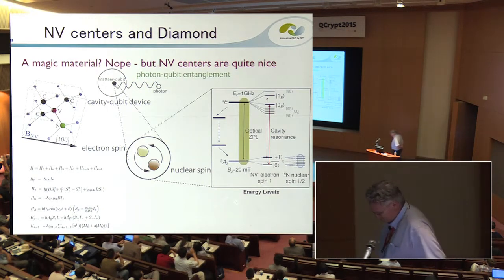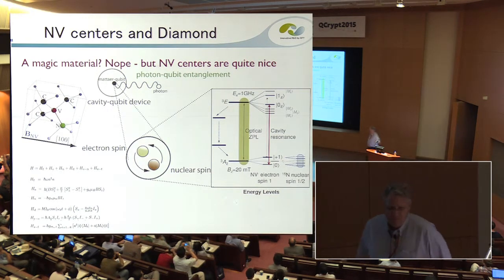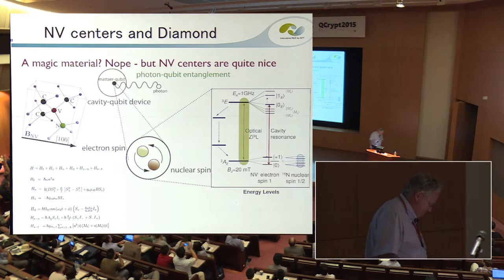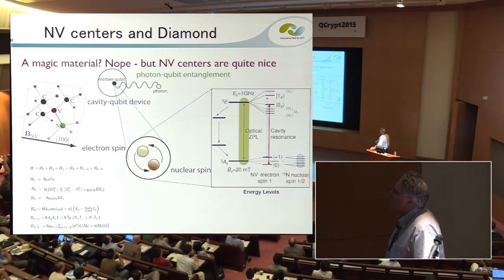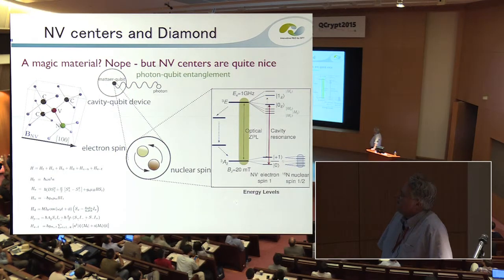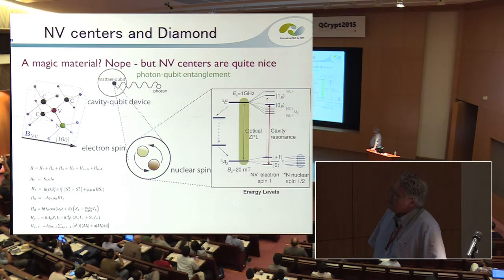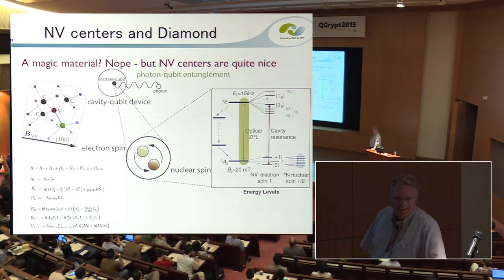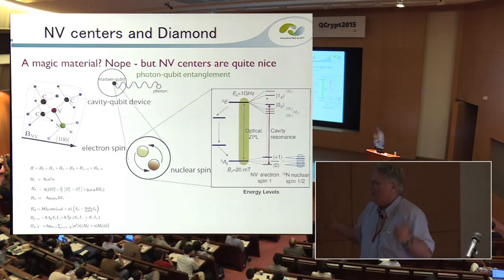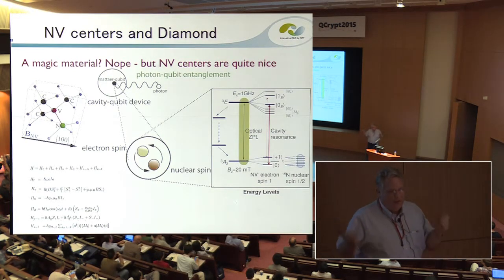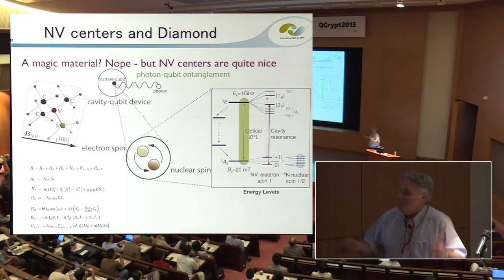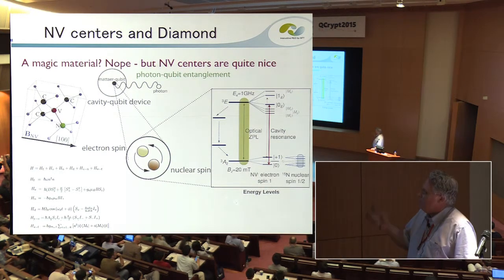I want to look at NV centers in diamond. It's an interesting physical system, and it's what the experimental group we're working with is actually working with. NV centers in diamond at room temperature — not on this application. We probably require, for these memories, working at four to eight Kelvin. The microwave properties of these systems just don't work well at room temperature.